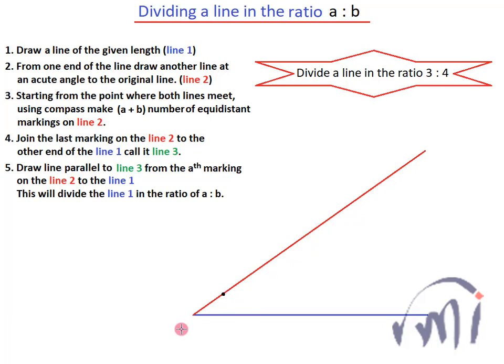Let this be the first point, this be the second, third, fourth, fifth, sixth and let this be the seventh equidistant point from this point where these two lines meet.